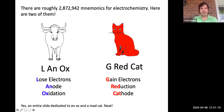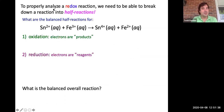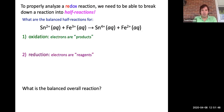There are roughly 2,872,942 mnemonics for electrochemistry — AN OX and RED CAT are two of them. Now let's look at half reactions. We're going to take an overall reaction and dissect it — look at what gained electrons and what lost electrons. Here we have tin (Sn) as a reactant with a +2 charge ending up at +4, and iron going from +3 down to +2.